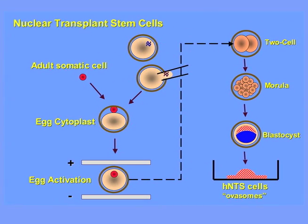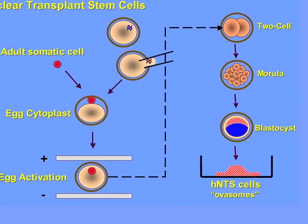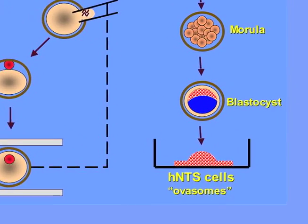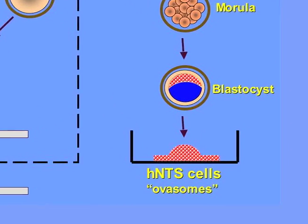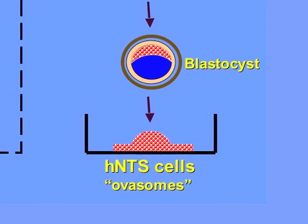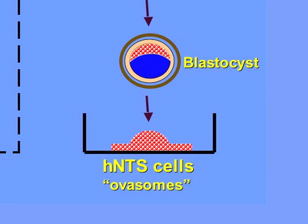This blastocyst looks a great deal like a blastocyst from an egg that was fertilized with sperm. Inside the blastocyst, there are groups of cells which have the potential to continually divide and renew their genetic information in the laboratory, and thus become a line of human nuclear transplant stem cells, or ovisomes.